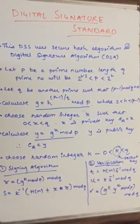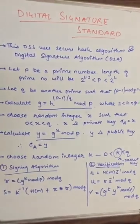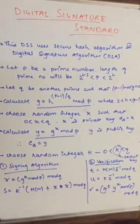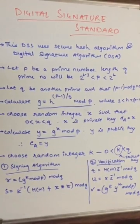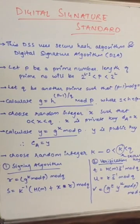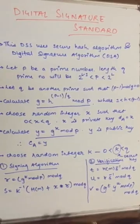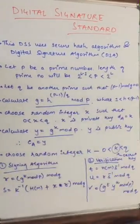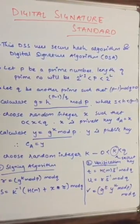Hello friends, welcome to lecture 13. In this lecture we are going to talk about the Digital Signature Standard. This standard uses the Secure Hash Algorithm and Digital Signature Algorithm. Let p be a prime number, and the length of the prime number will be between 2 raised to L minus 1 and 2 raised to L.